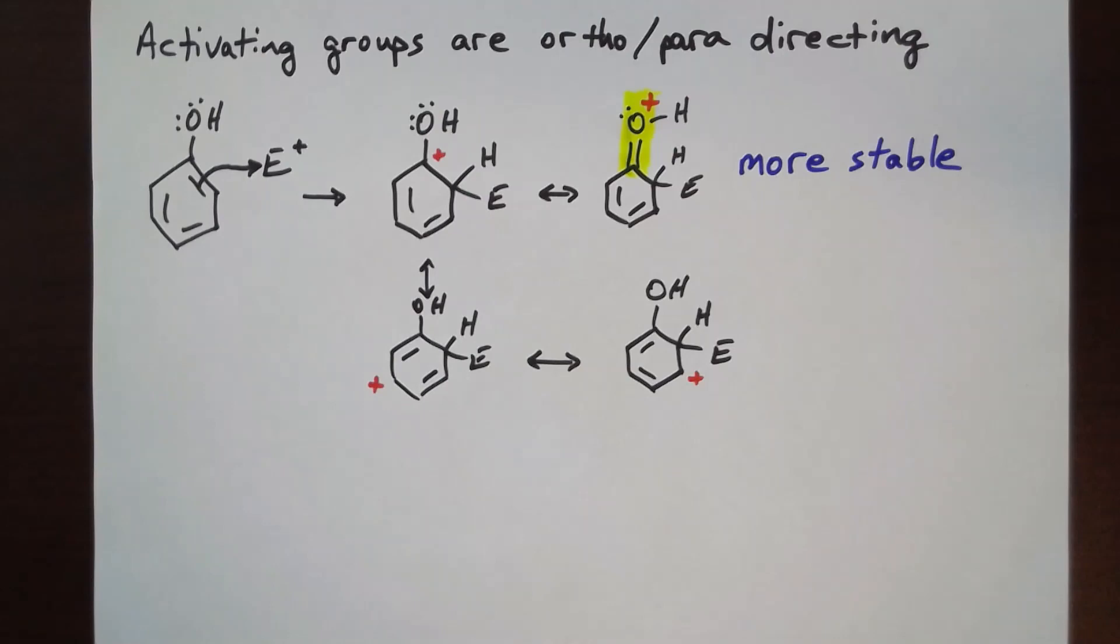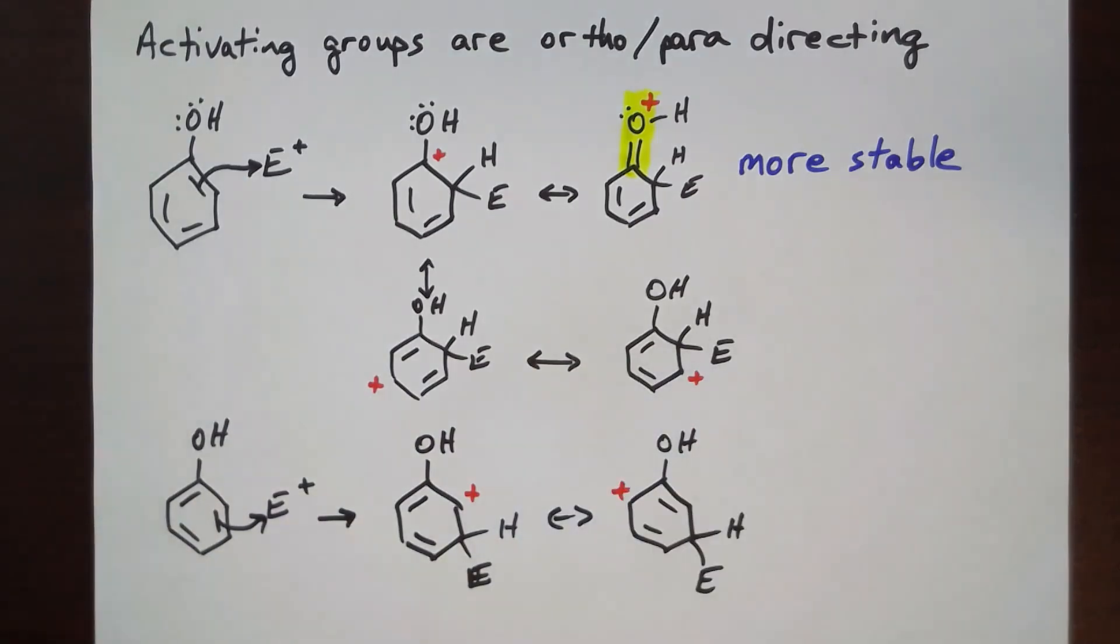For para-addition, the oxygen can also share the positive charge. In contrast, if the electrophile adds in the meta position, the resonance structures show the positive charge being shared only among three carbons in the benzene ring. Meta-addition, therefore, is less stable.